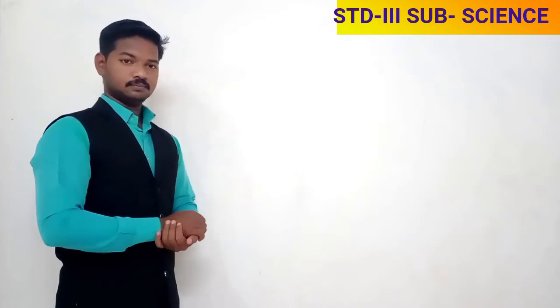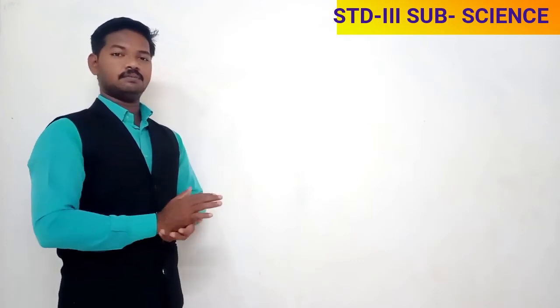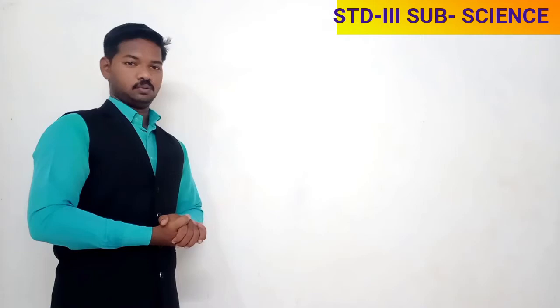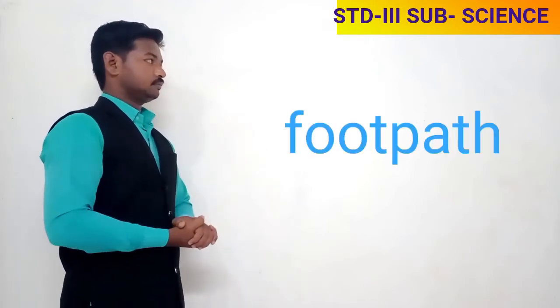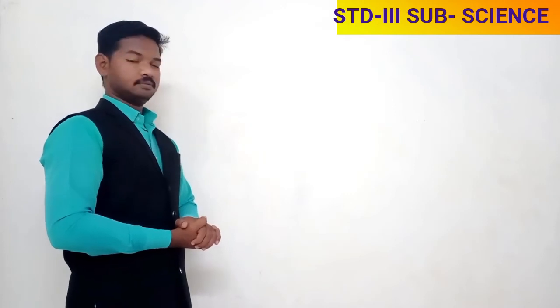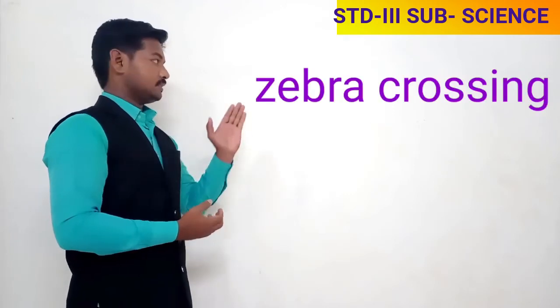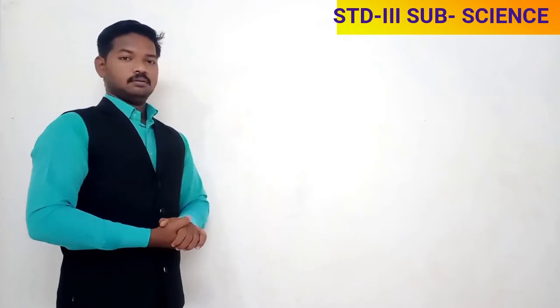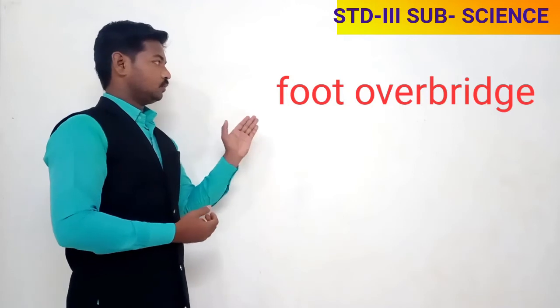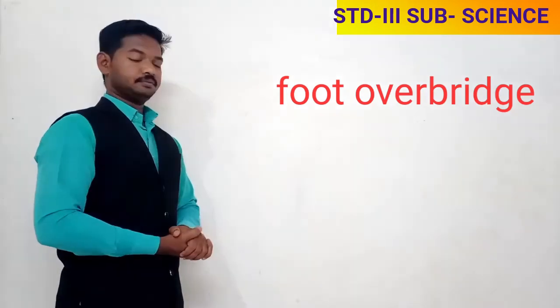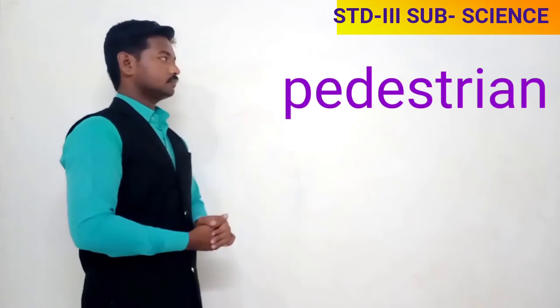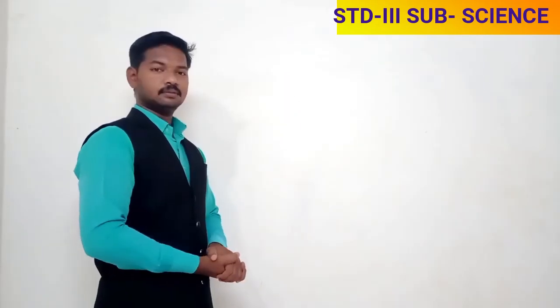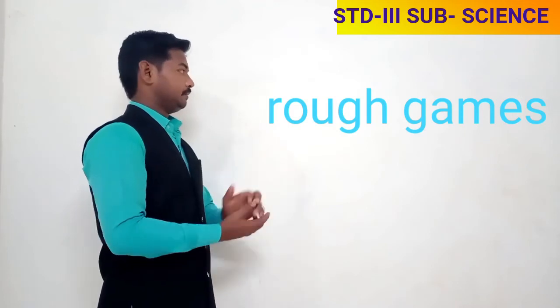Now I'll give you some words that you have to write in your notebook. Number one: footpath. Number two: zebra crossing. Number three: foot over bridge. Number four: pedestrian. Number five: rough games.